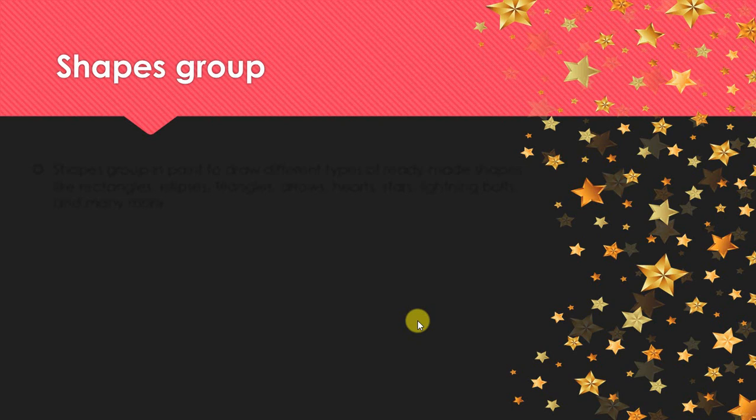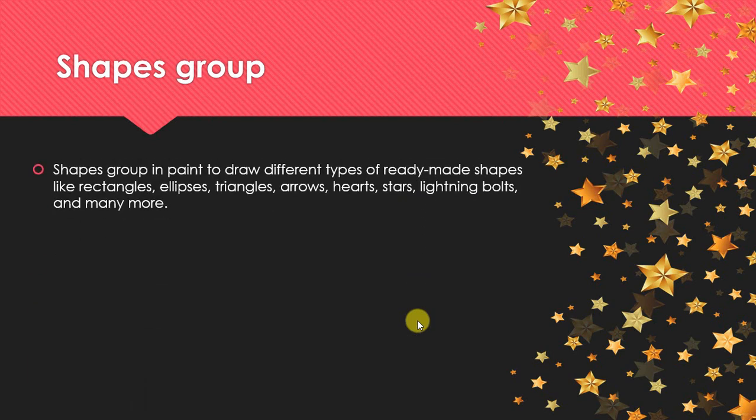Next, shapes group. Shapes group is basically a group that consists of different types of shapes that you can use in your drawing. You use the shape group in paint to draw different types of ready-made shapes like rectangles, ellipses, triangles, arrows, hearts, stars, lightning bolts, and many more.